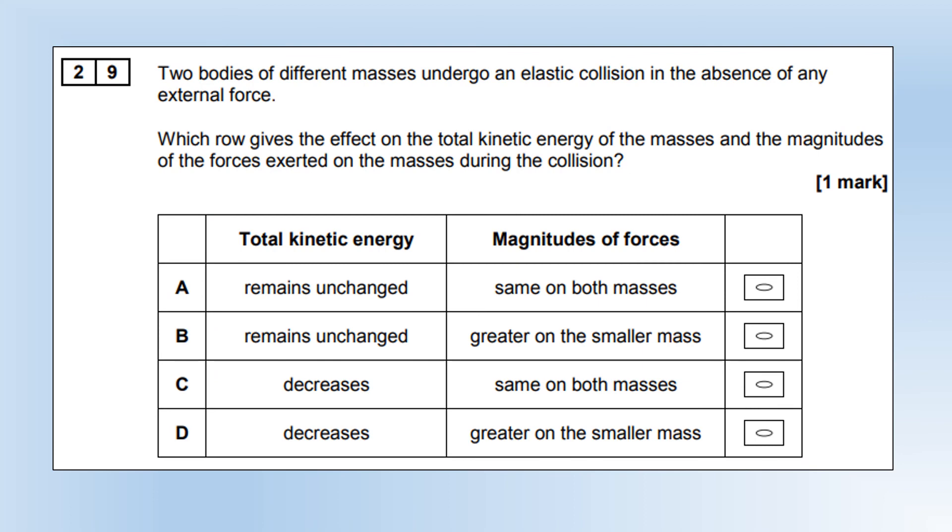Two bodies of different masses undergo an elastic collision in the absence of any external force. Which row gives the effect on the total kinetic energy of the masses and the magnitudes of the forces exerted on the masses during the collision? It's an elastic collision, so the total kinetic energy remains unchanged. So it's A or B. And the forces are the same on both, because of Newton's third law.